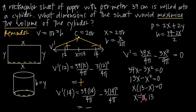Because we tested V' — the derivative of the volume function — we can say x = 13 is the point at which volume is maximized. Our final step is to go back to the original question: 'What dimensions of the sheet maximize the volume?' We need to give both x and y. We know x = 13, so we still need to find y.